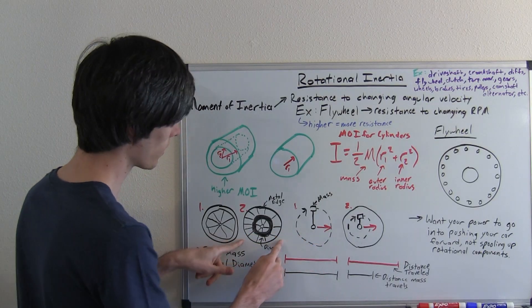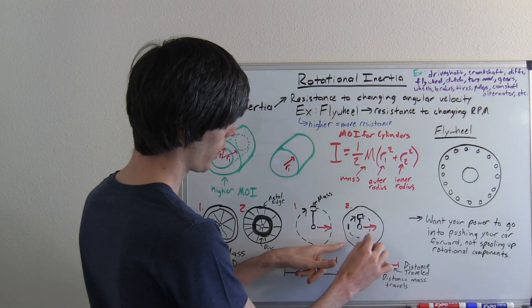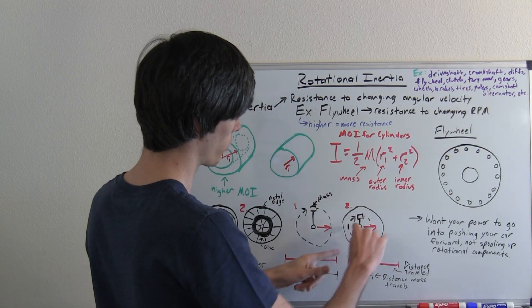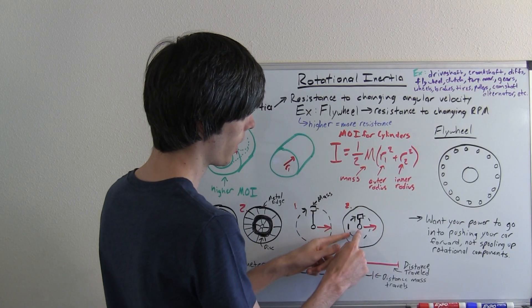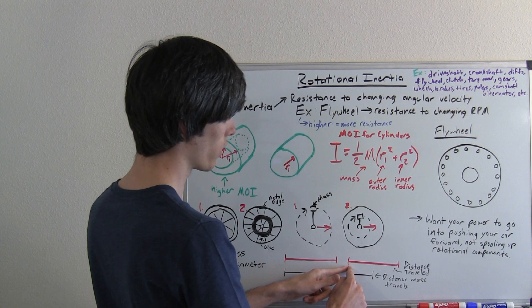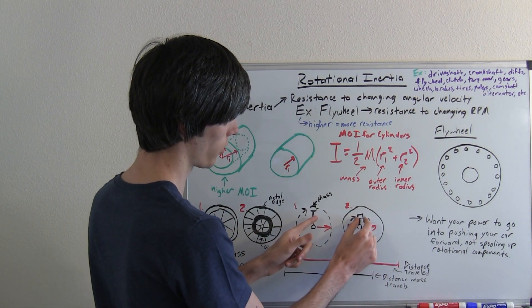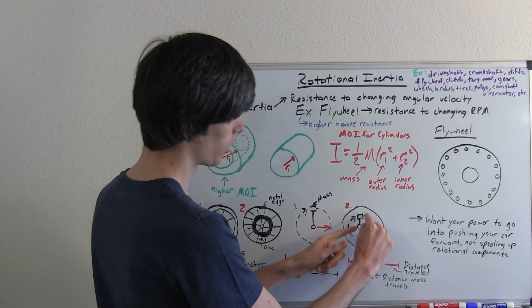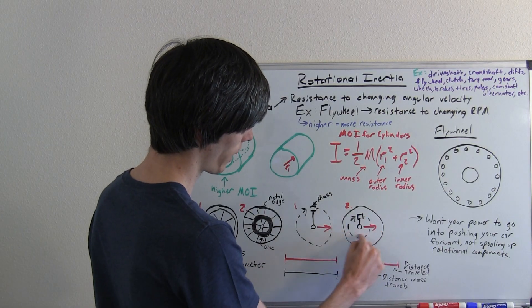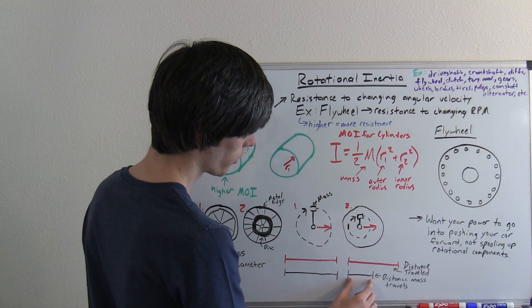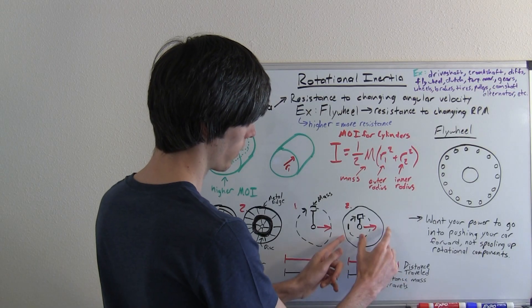Now if you take the second tire and you have the same outer diameter, so you do one rotation, that outer diameter means the wheel is going to move that same distance that this one moved. But because your mass is further in, that mass is only moving a distance of that inner diameter there, so it's not going to move the full distance that this wheel moved.